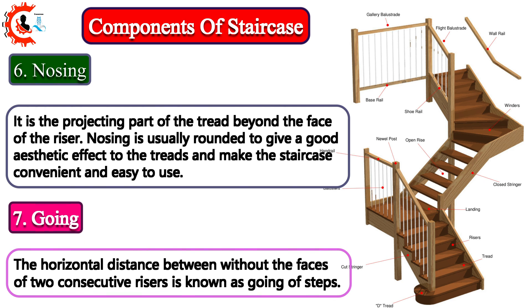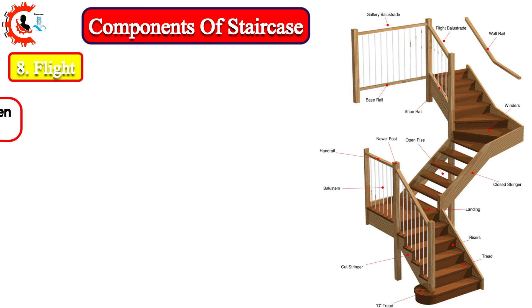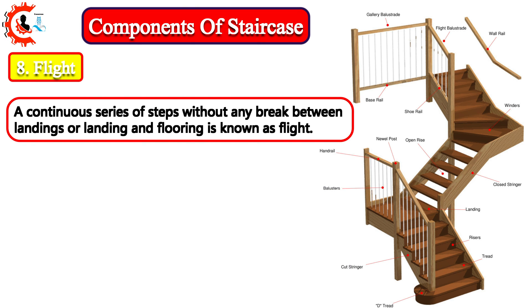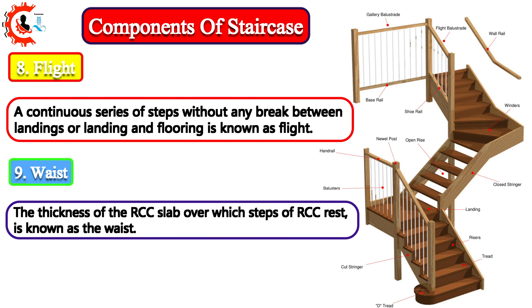7. Going: The horizontal distance between the faces of two consecutive risers is known as going of steps. 8. Flight: A continuous series of steps without any break between landings or landing and flooring is known as flight. 9. Waste: The thickness of the RCC slab over which steps of RCC rest is known as the waste.